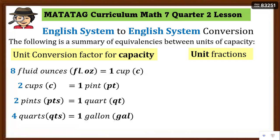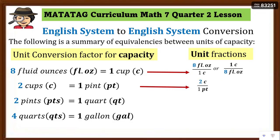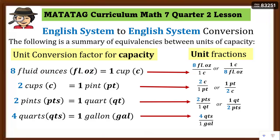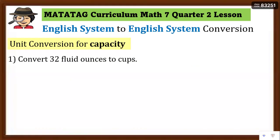From these conversion factors, we derive unit fractions to change units. For example: 8 fluid ounces over 1 cup, or 1 cup over 8 fluid ounces; 2 cups over 1 pint, or 1 pint over 2 cups; 2 pints over 1 quart, or 1 quart over 2 pints; and 4 quarts over 1 gallon, or 1 gallon over 4 quarts. These are the unit fractions needed to convert to another unit.